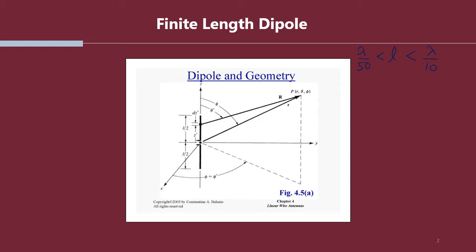A better approximation of the current from the dipole can be approximated by using a triangular approximation or variation. It is assumed that the dipole antenna is oriented along the z-axis and positioned symmetrically about the origin — center-fed at the origin and symmetrical for both the upper and bottom arms.